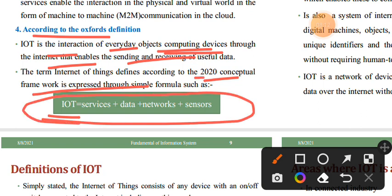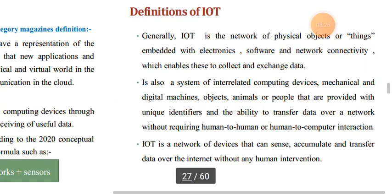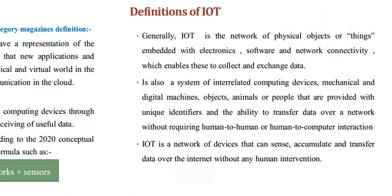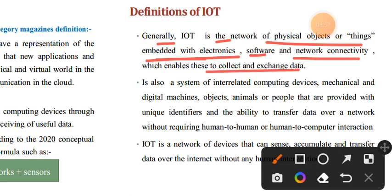The term Internet of Things, according to the 2020 conceptual framework, is expressed by a simple formula: IoT equals services, data, networks, and sensors. This conceptual framework defines IoT through data, networks, sensors, and services, with network connectivity enabling devices to exchange data.